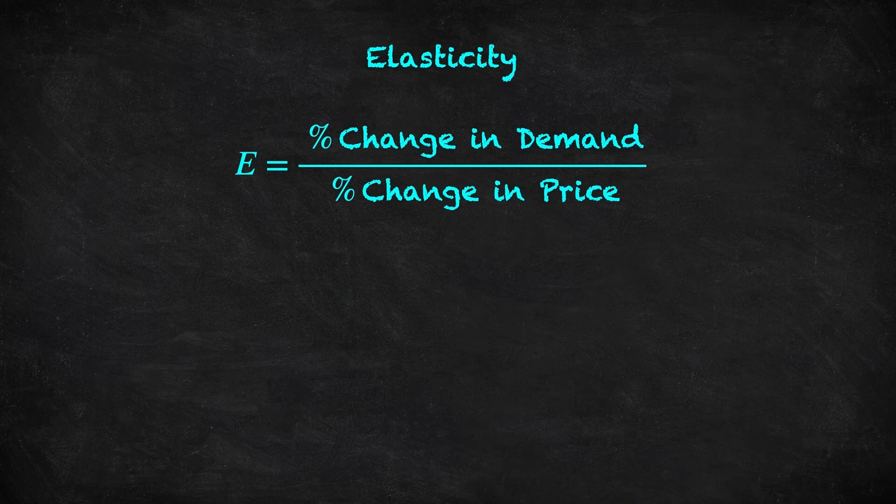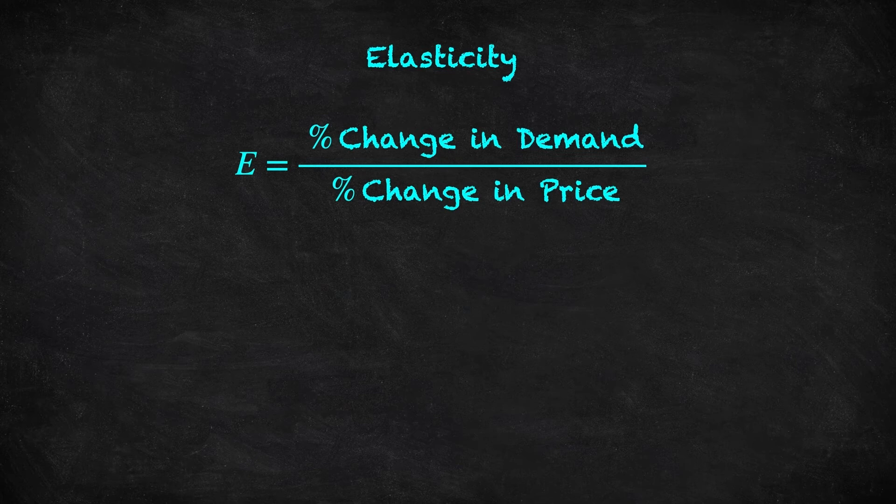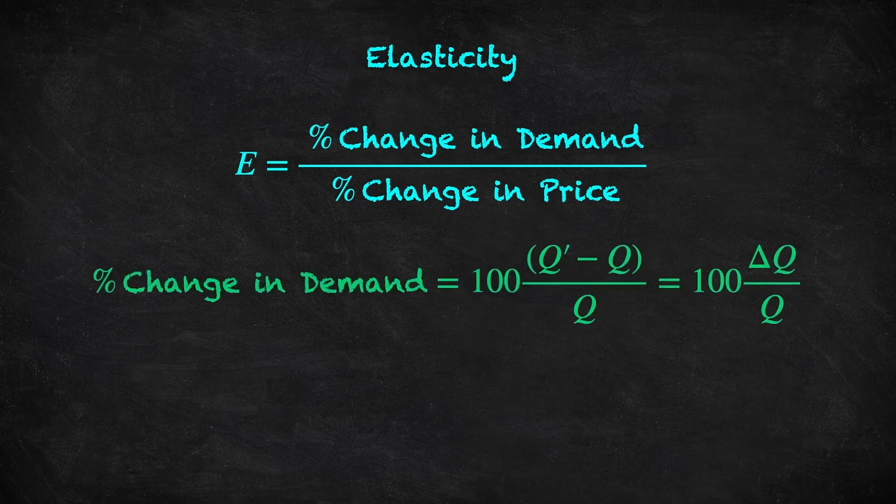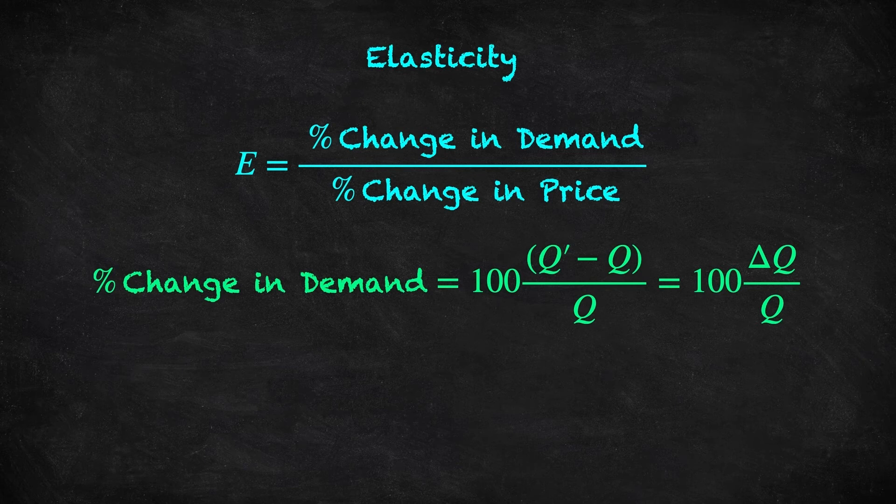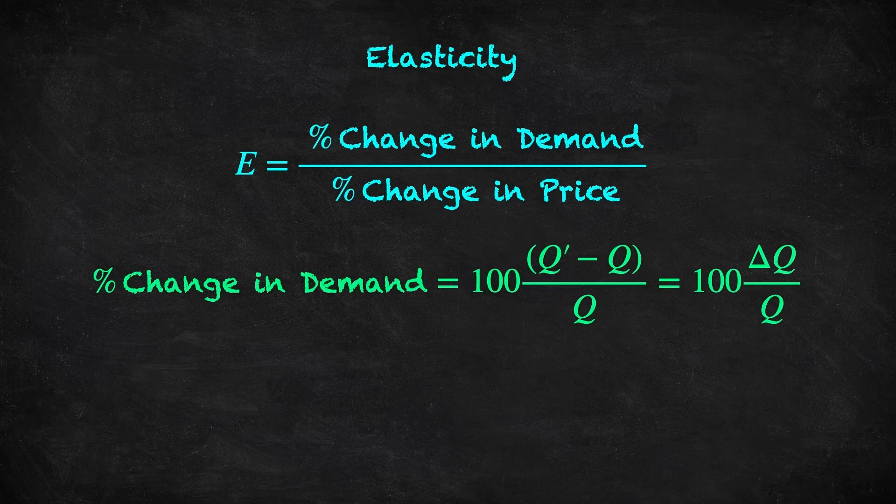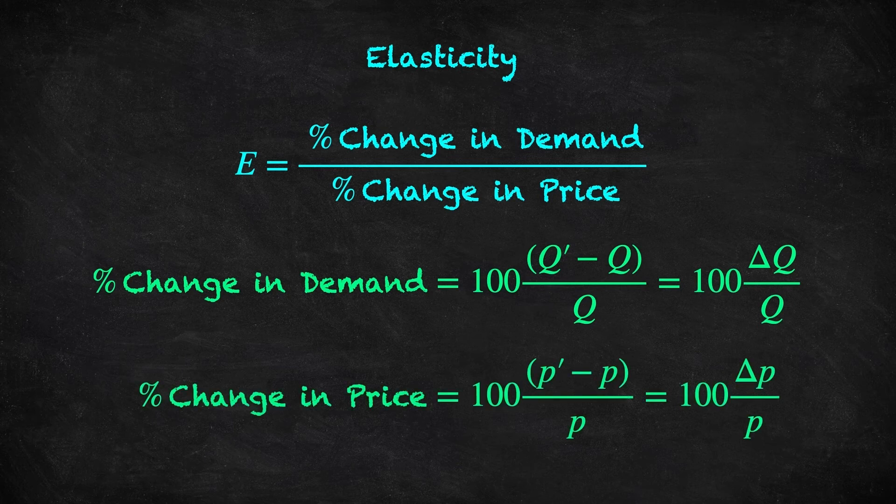Now we have the basic idea, it's time to do some analysis. The percentage change in demand can be calculated like this: taking Q prime, the new demand, minus Q, to get the change in demand, dividing it by Q, and multiplying it by 100. We use this triangle, which is a Greek capital delta, as a shorthand for the change Q prime minus Q. The percentage change in price can be calculated in the same way.